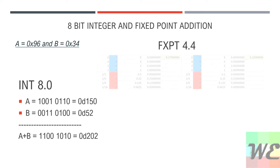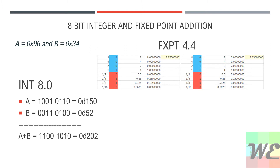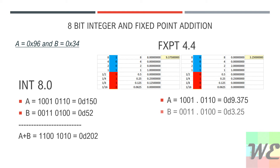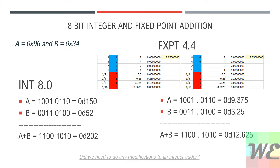Now we're going to be looking at it in fixed-point 4.4. I have this Excel table where you can see how we actually get those weighted values. When A is equal to 9.0110, you can see it's 9.375, and B is 3.25. When you add them together, you get decimal 12.625. Now we're going to actually do that in Digital, the simulator.